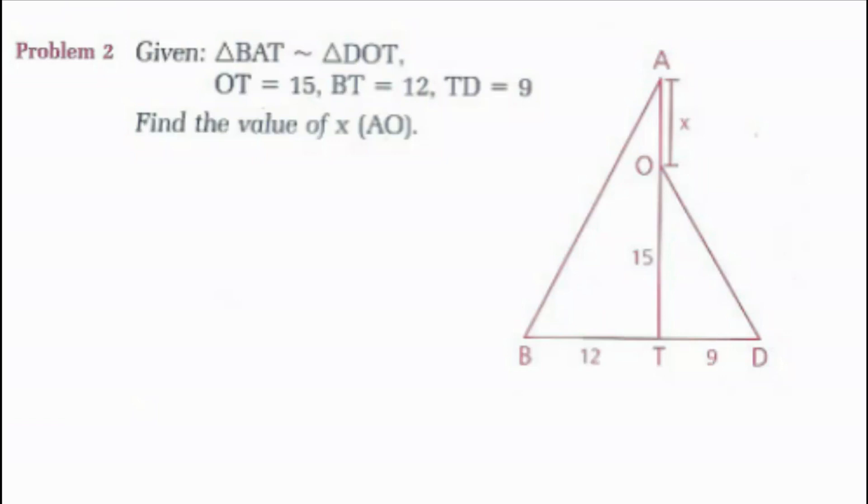Looking at problem two, we're given triangle BAT is similar to triangle DOT. OT is 15, BT is 12, TD is 9. I want to find the value of X, which is side AO. Since these triangles are similar, I know that the ratios of their corresponding sides are equal, so I can set up a proportion to solve for X. Now, there's many different proportions that I could set up. I just have to make sure that I'm consistent in my numerators and my denominators.